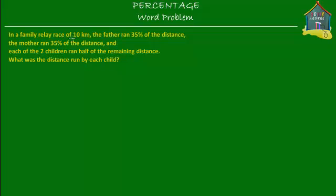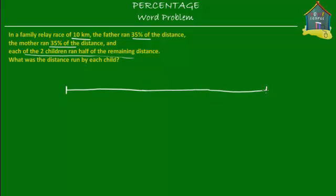Let's mark the important things. The race was 10 kilometers long. The father ran 35% of the distance. The mother ran 35% of the distance and each of the two children ran half of the remaining distance. Let's put this on a number line. This represents the distance of the relay race — you start at 0 kilometers and finish at 10 kilometers.